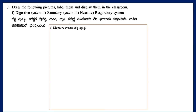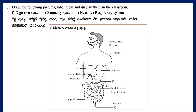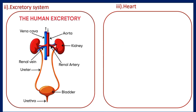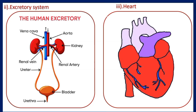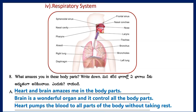Question 7: Draw the following pictures, label them, and display them in the classroom: 1. Digestive System. 2. Excretory System. 3. Heart. 4. Respiratory System.